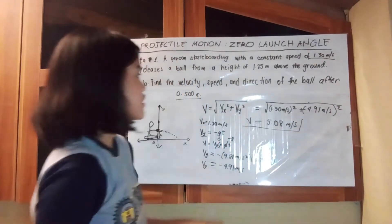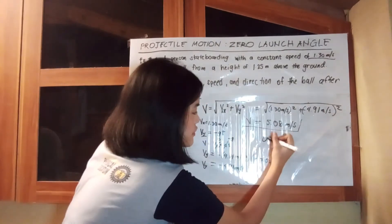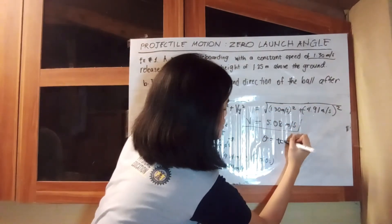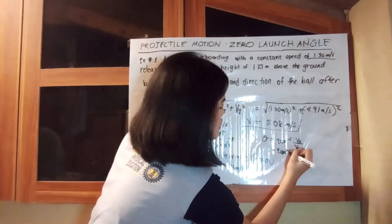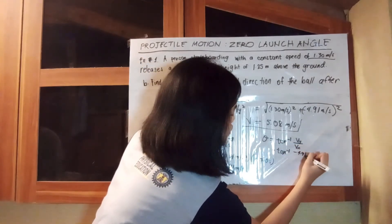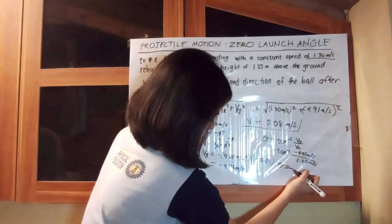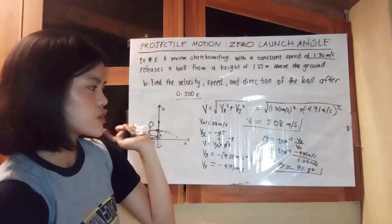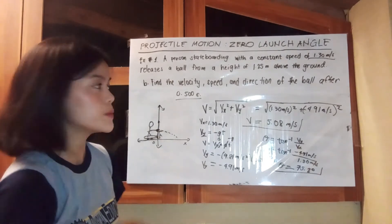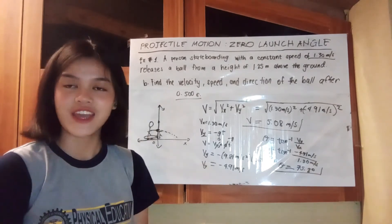That is our final velocity of 5.08 meters per second when time equals 0.500 seconds. For the direction, we use the inverse tangent of v_y over vₓ: inverse tangent of (−4.91 / 1.30), giving an angle of 75.2 degrees. So our velocity is 5.08 meters per second and our direction is 75.2 degrees below horizontal at t = 0.500 seconds. This is projectile motion with zero launch angle — thank you so much for watching.